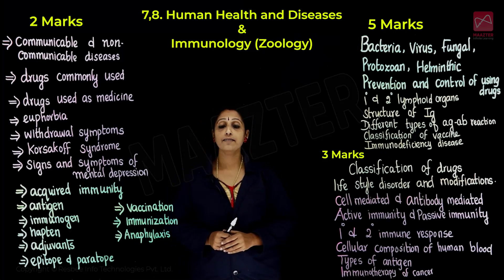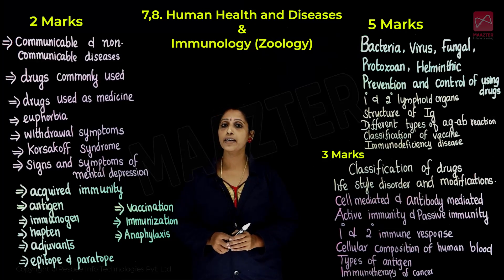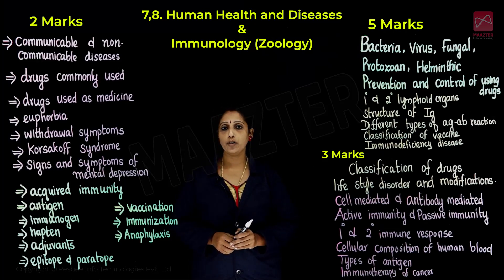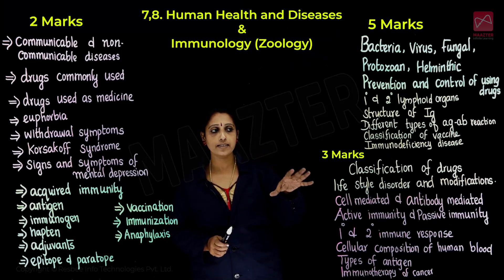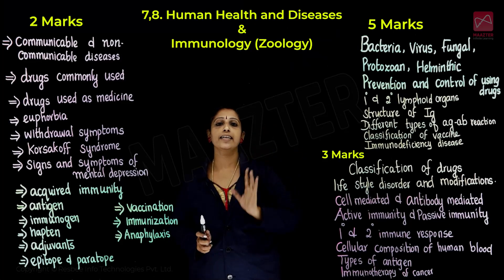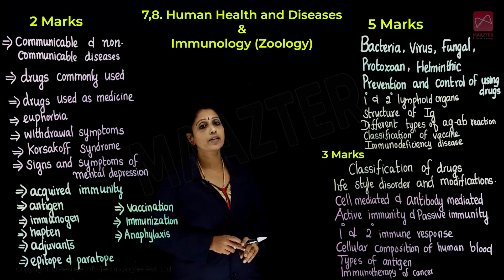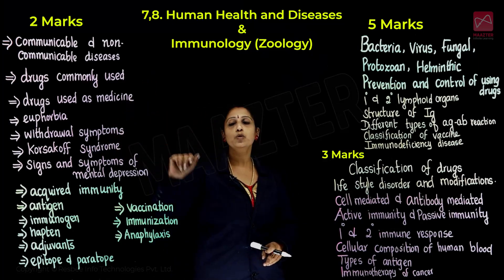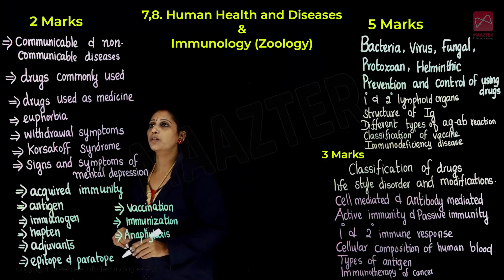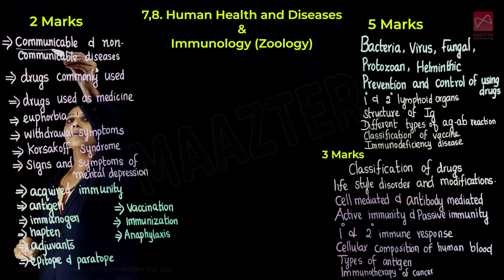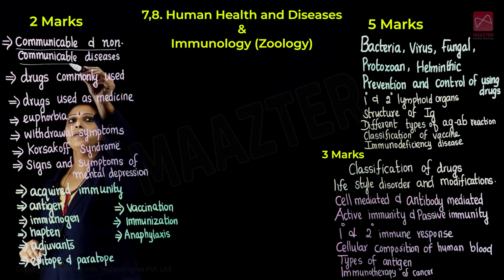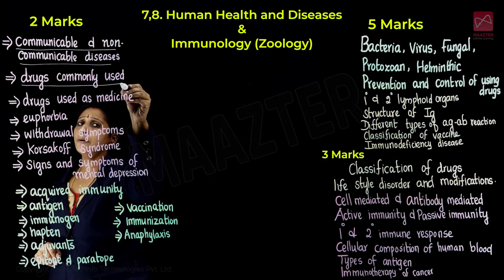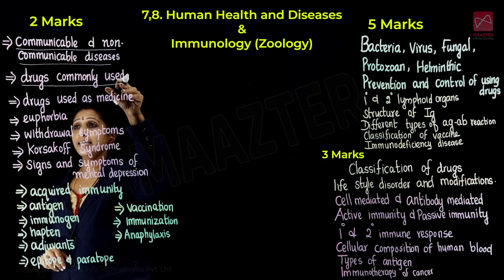Now we have chapters 7 and 8 — that means Human Health and Diseases and Immunology. Biology students have two lessons in this section, so we will talk about important questions here. The key topics include communicable and non-communicable diseases, and drugs commonly used — such as opioids and cannabinoids.